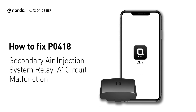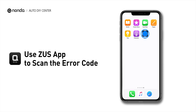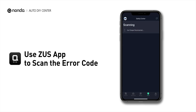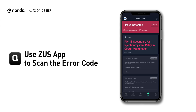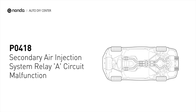If you are getting a P0418 error code, this video is going to show you two practical solutions to fix the error code at home. Use the Zeus app to scan your vehicle and see the error code P0418. It indicates that the voltage readings from the secondary air injection system register a difference of more than 10% over manufacturer specifications.